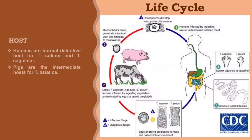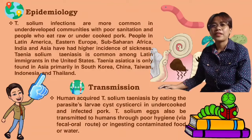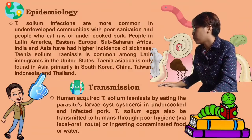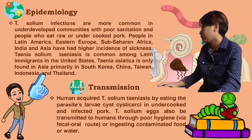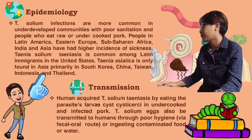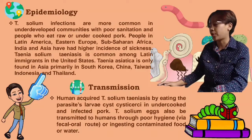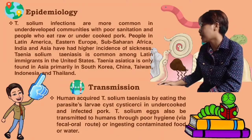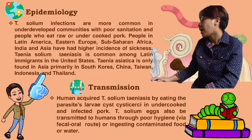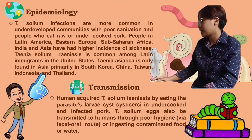For the host, humans are the normal definitive hosts for Taenia solium and Taenia saginata, while pigs are the intermediate hosts for Taenia asiatica. For the epidemiology, Taenia solium infections are more common in underdeveloped communities with poor sanitation and people who eat raw and undercooked pork. People in Latin America, eastern Europe, sub-Saharan Africa, India, and Asia have had higher incidence of sickness.